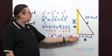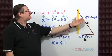b is going to be 25 feet, and c, the hypotenuse, is 65 feet.